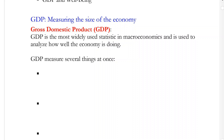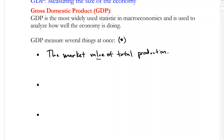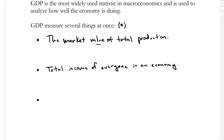So GDP is measuring several things here all at once. All of them are in dollar values. The first one is going to be the market value of total production. The next one is the total income of everyone in an economy, and the last is the total expenditure on an economy's output.